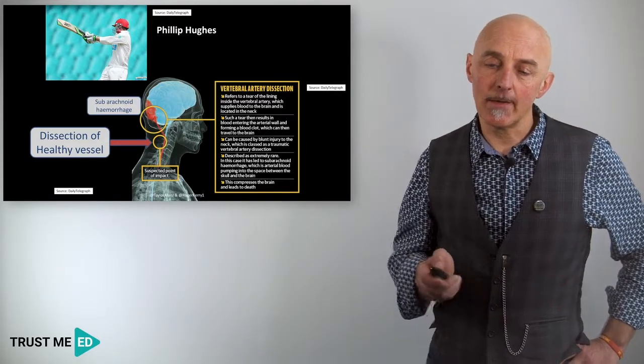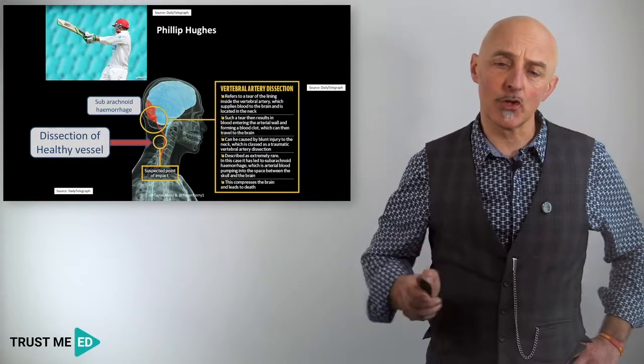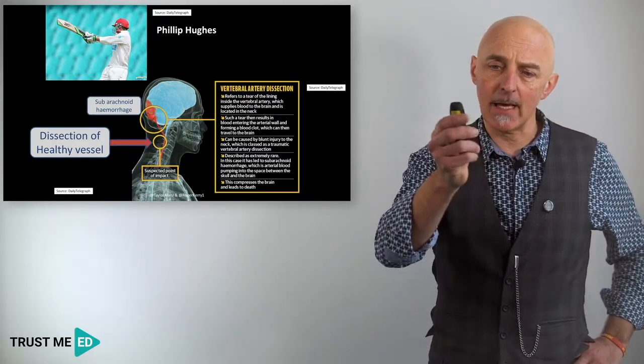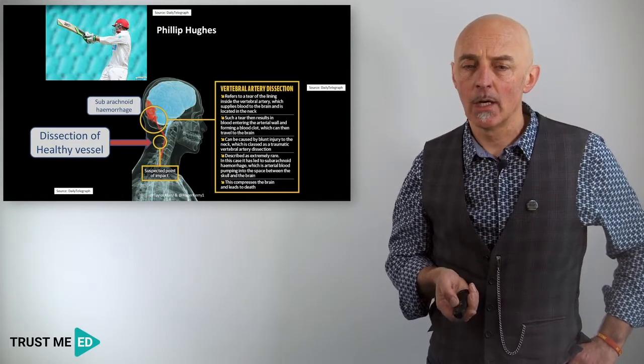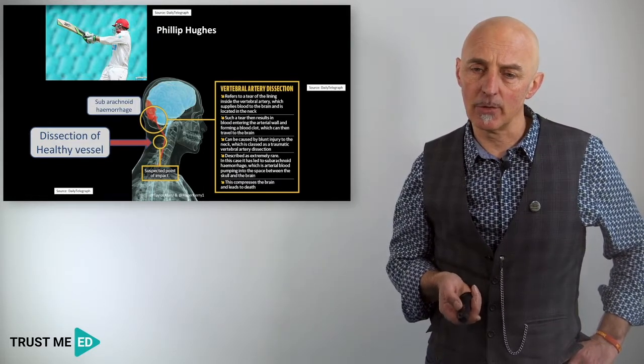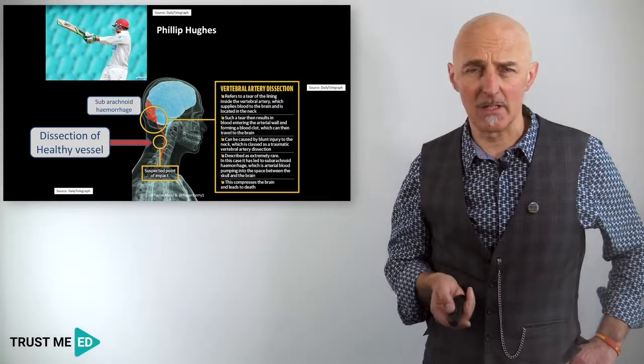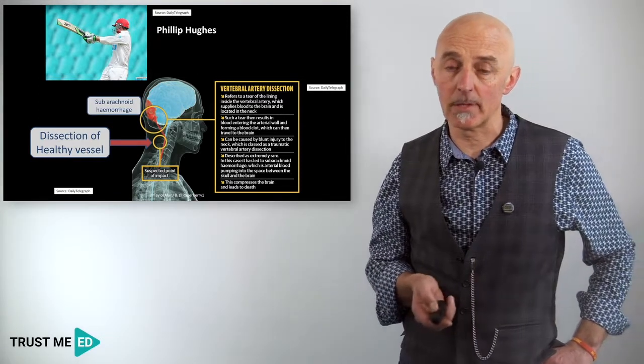And unfortunately, the dissection, or the blood, tracked up the vessel and then exited up in the brain as a subarachnoid hemorrhage. And this was an unfortunate event that Philip Hughes didn't survive. So this led to his ultimate death, unfortunately.